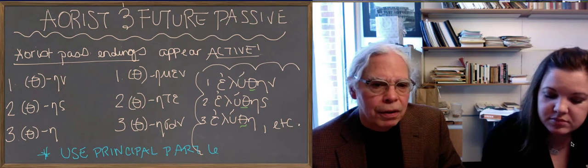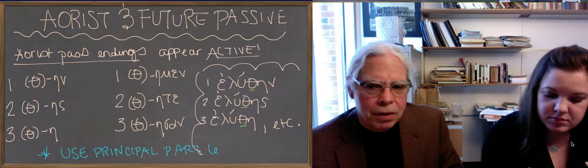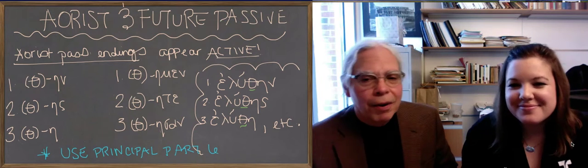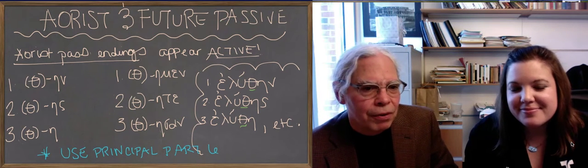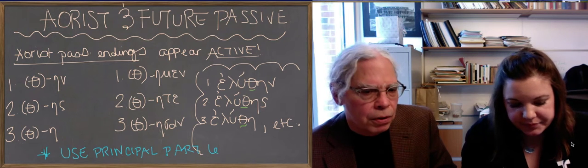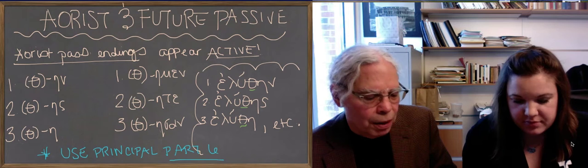So if we look in Greek verbs, in a standard presentation of the principal parts, come a little closer. The standard presentation of Greek verbs, the aorist passive is the last principal part, the sixth one. That's why it says at the bottom use principal part 6.